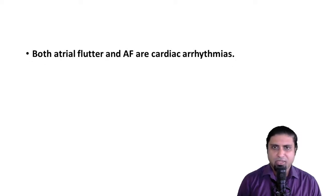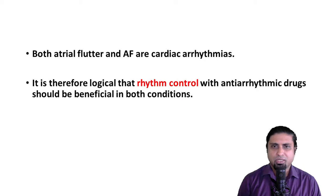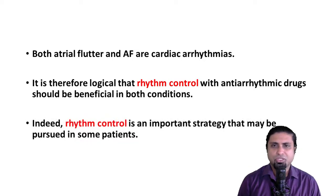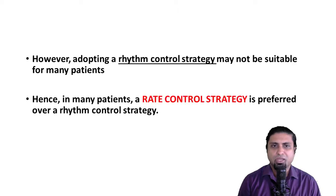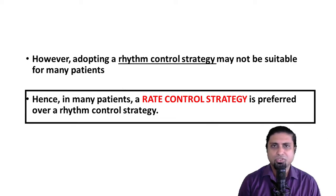Both atrial flutter and atrial fibrillation are cardiac arrhythmias, and therefore it is logical that rhythm control with anti-arrhythmic drugs should be beneficial in both conditions. Indeed, rhythm control is an important strategy that may be pursued in some patients. However, adopting a rhythm control strategy is not suitable for many patients, and hence in such patients a rate control strategy is preferred.